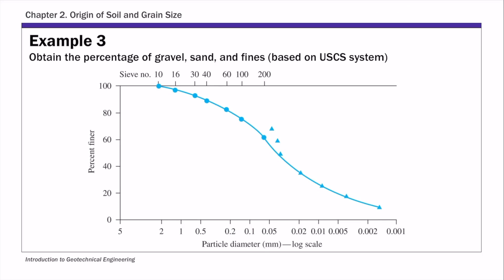This is example three of chapter two. For this example you are given a particle size distribution curve and you are asked to obtain the percentage of gravel, sand, and fines using the USCS system. To obtain the percentage of these different types of soils, first you need to know what are their particle size ranges.